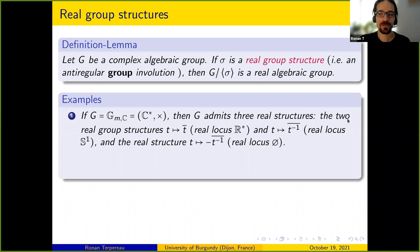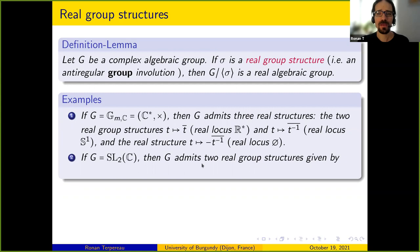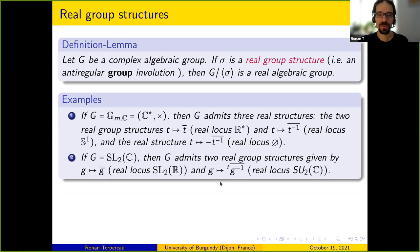Similarly, if you take G = SL2(C), you have exactly two real group structures: G ↦ Ḡ corresponding to SL2(R), and G ↦ (G^T)^{-1}̄ corresponding to SU(2). These are certainly inequivalent since one is compact and the other is not, and one can check there is nothing else.